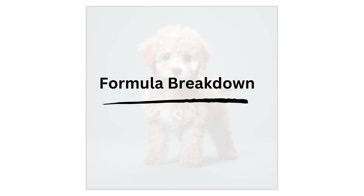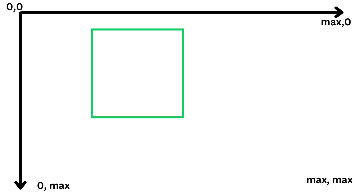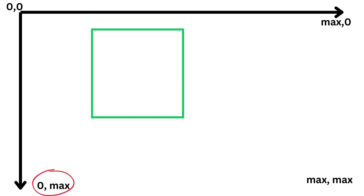Let's now break down how we can go from bounding boxes to the IOU formula with the three areas properly calculated. Specifically for object detection, our grid should look somewhat like this with only positive coordinate points. Top left is our origin (0, 0) and corresponds to the top left of the picture. Top right, we have the x-axis at its maximum at the edge of the picture. Bottom left, we have the y-axis at its maximum at the lower edge. And at the bottom right, both axes are at their maximum.